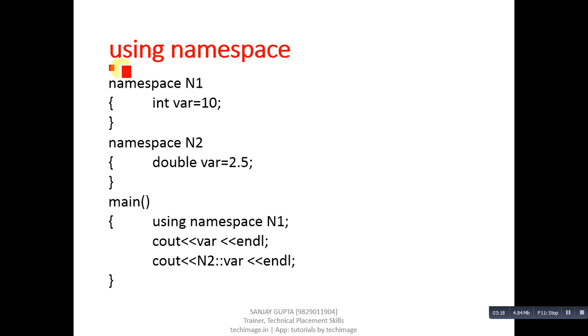To remove that problem, we can use the using keyword. These namespaces are the same as in the previous example. Here, the using keyword is using namespace N1, so we can use members of N1 namespace directly without using the scope resolution operator. But for N2, we have to use the scope resolution operator. If you want to avoid this, before using members of N2 namespace, you can write a statement using namespace N2.